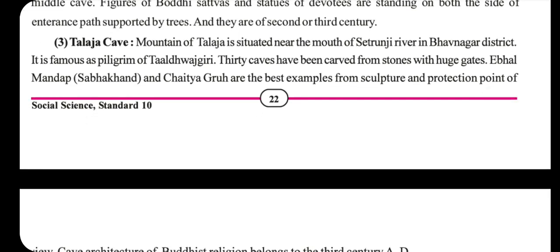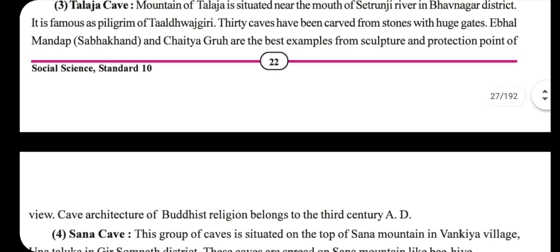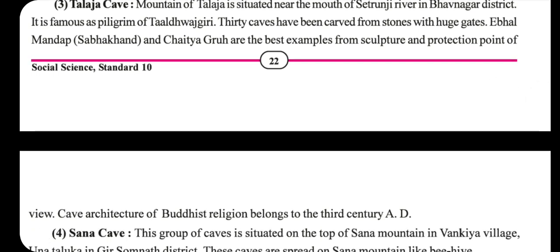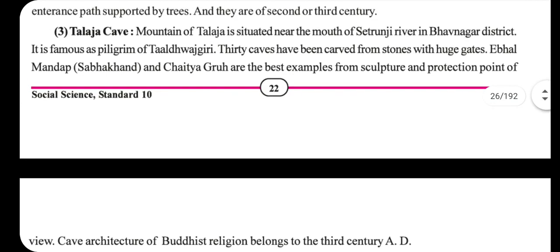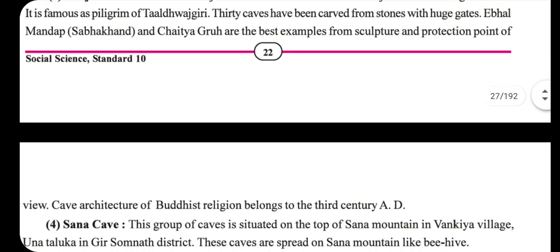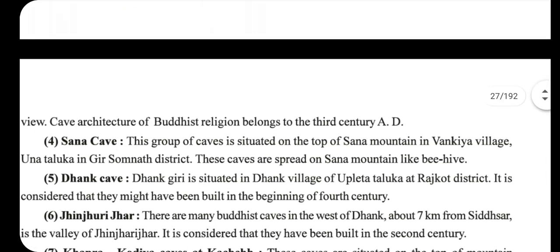Talaja caves: the mountain of Talaja is situated near the mouth of the Satrunjaya river in Bhavnagar district, and is famous as a pilgrimage site known as Thaladwajgiri. Thirty caves have been carved from stone with huge gates. The Ebal Mandap and chaitya-griha are the best examples from a sculptural point of view.